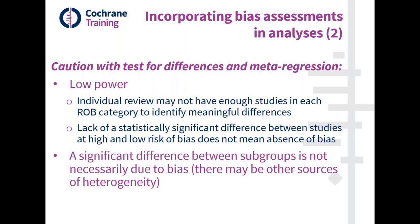Some cautions with these tests of differences and meta-regression: these examples illustrate we should be cautious when interpreting subgroup analysis and meta-regression. Individual reviews may not have enough studies in each risk of bias category to identify meaningful differences. Just because the confidence interval for the meta-regression estimate crosses the null does not guarantee absence of bias. Conversely, even if you observe a significant difference between subgroups by risk of bias, the observed difference may not necessarily be due to bias — there could be other sources of heterogeneity.